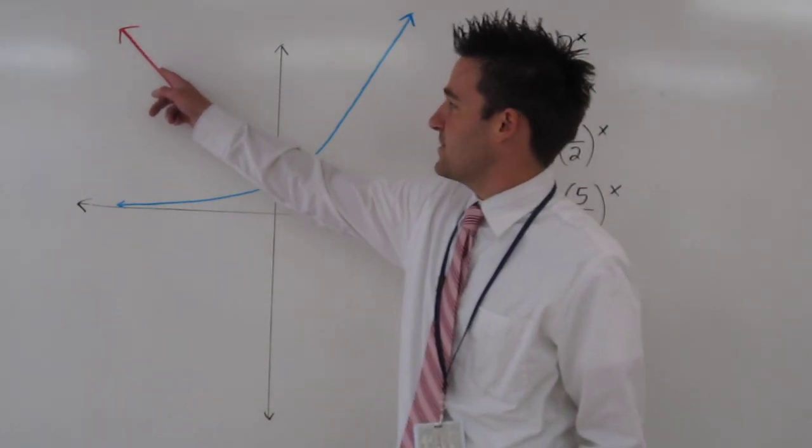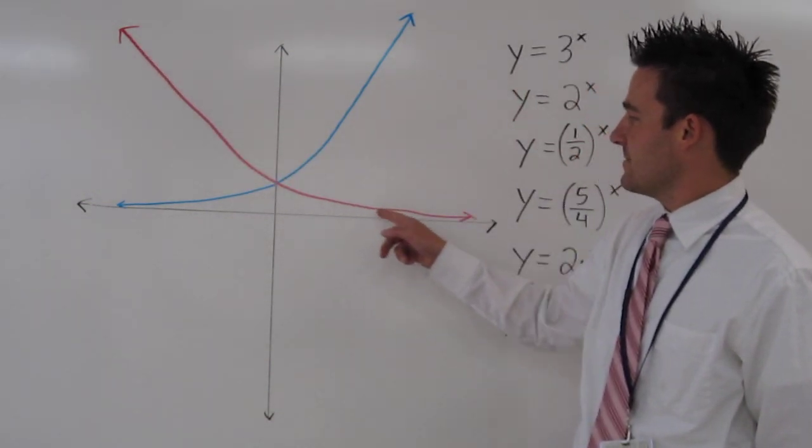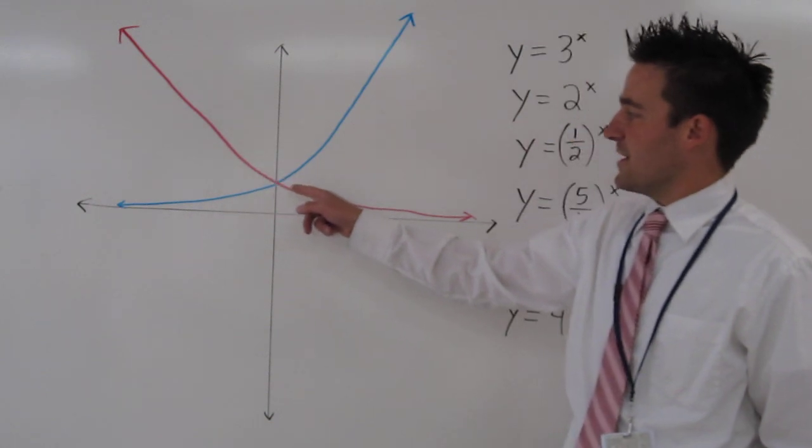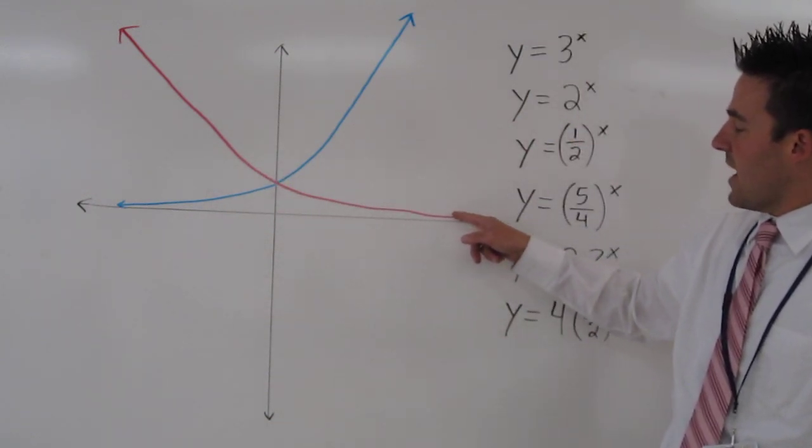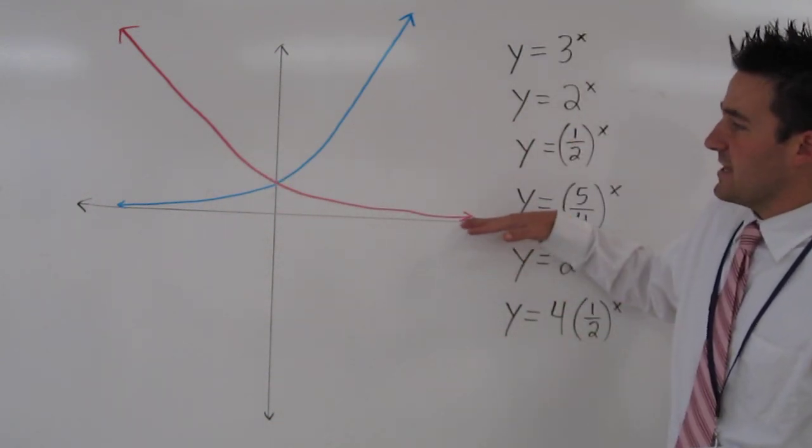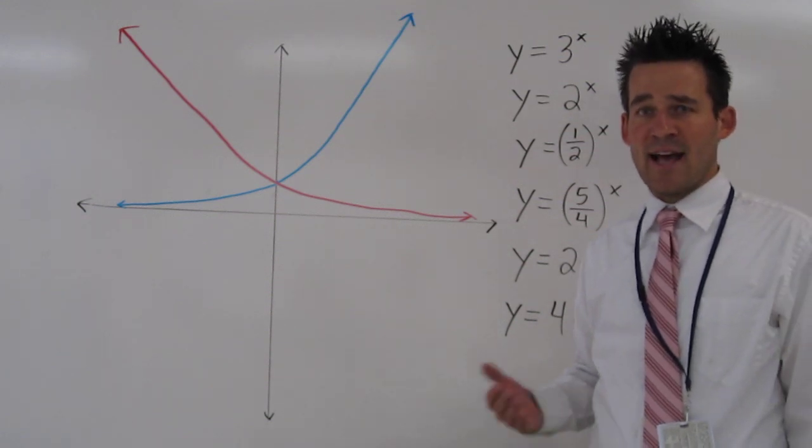This red line shows exponential decay. As x values get larger and larger, the red line gets closer and closer to the x-axis, which is called an asymptote.